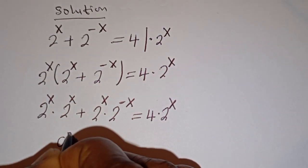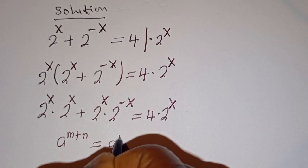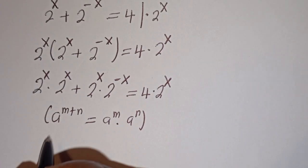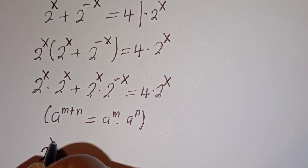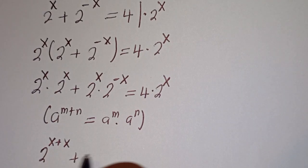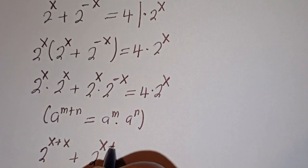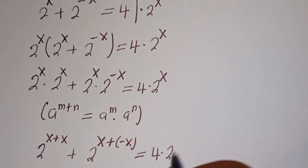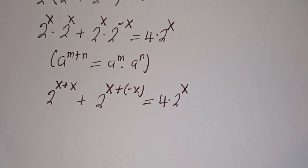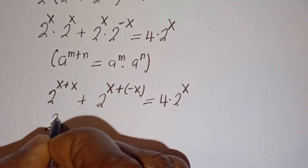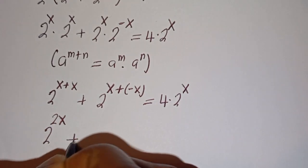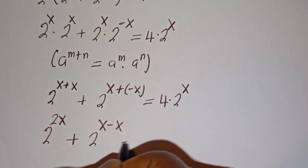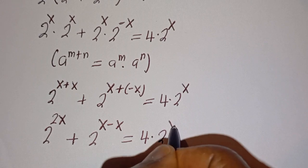Take note that if you have a to the power of m plus n, this is equal to a to the power of m multiplied by a to the power of n. And this can be written as 2 to the power of x plus x plus 2 to the power of x minus x is equal to 4 multiplied by 2 to the power of x. Here this is 2x and 2 to the power of x minus x, giving 2 to the power of 2x plus 2 to the power of 0 is equal to 4 multiplied by 2 to the power of x.